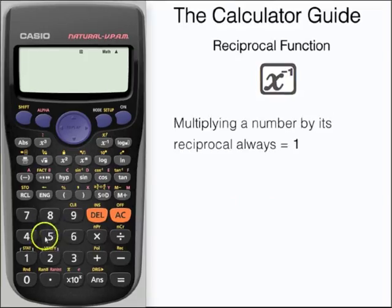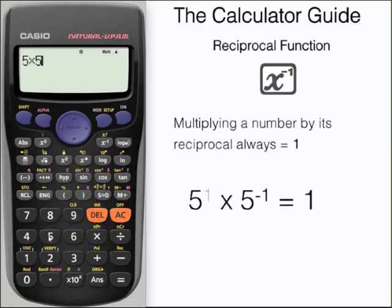When multiplying a number by its reciprocal, the answer should always be 1. Let's try that now with 5. Input 5 times 5, then press the reciprocal button. Press equals and here we have the answer, 1. That should be true for all your reciprocals, so you could go back and try it with the ones we learned previously.